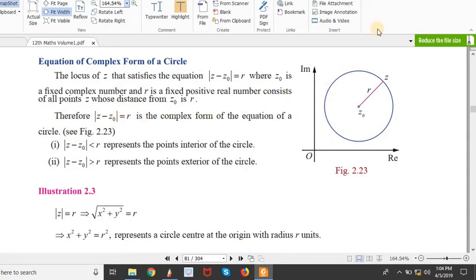The equation of a circle is z minus z₀ equal to r. If |z - z₀| < r, this represents the points in the interior of the circle. If |z - z₀| > r, then it represents points on the exterior of the circle.